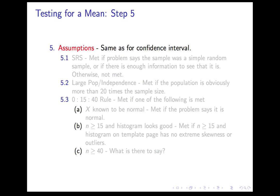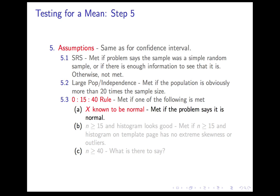Step 5: assumptions. Once again, this should be old hat for you. Simple random sample is met if the problem says the sample is a simple random sample, otherwise not met. Large population or independence assumption met if the population is more than 20 times the sample size. Usually that's obvious. And then, of course, we have the 0·15·40 rule. Either X is known to be normal, that's met if the problem says that X is normal, or n is at least 15 and the histogram looks good. That's met if n is at least 15 and the histogram on your template page has no extreme skewness or outliers. And finally, n is at least 40, then it's simply met.